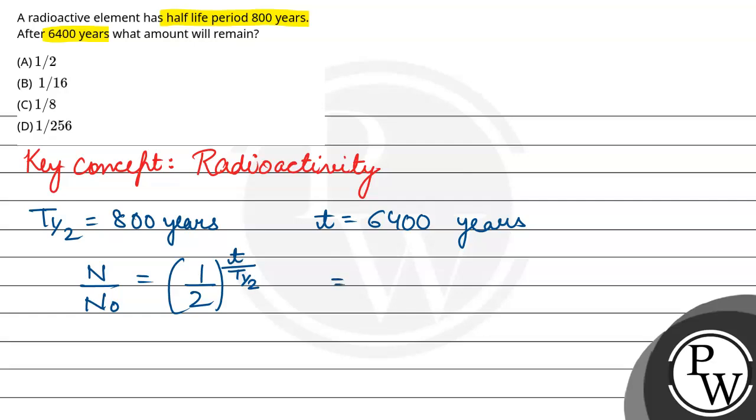So let's put the values: 1 by 2, t's value is 6400 by 800, so this becomes 1 by 2 to the power 8, which equals 1 by 256.